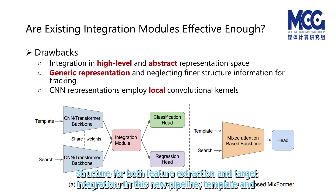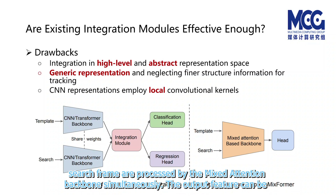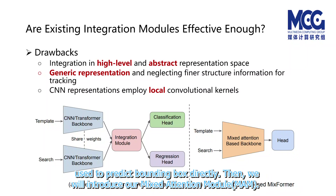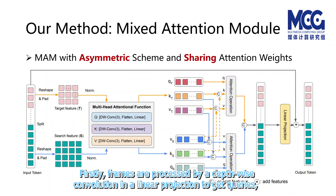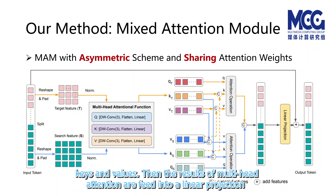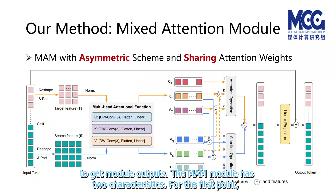Based on this analysis, we want to design a unified structure for both feature extraction and target integration. In this new pipeline, the template and search frame are processed by the mixed attention backbone simultaneously, and the output feature can be used to predict the bounding box directly. The mixed attention module takes frames through a depthwise convolution and linear projection to obtain queries, keys, and values, then feeds multi-head attention results into a linear projection to get module outputs.